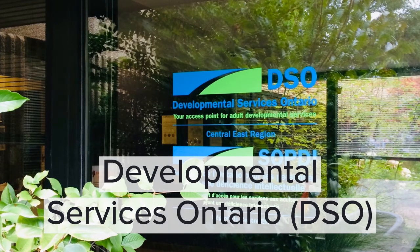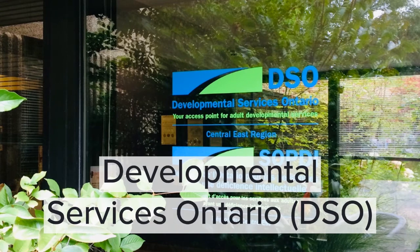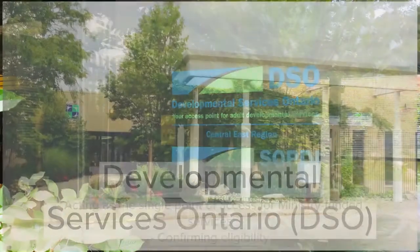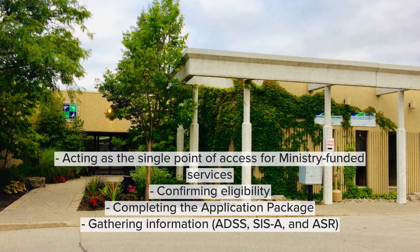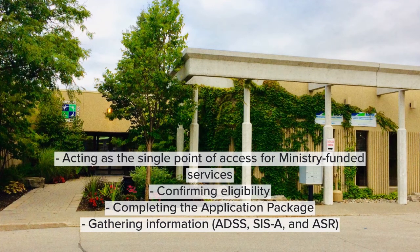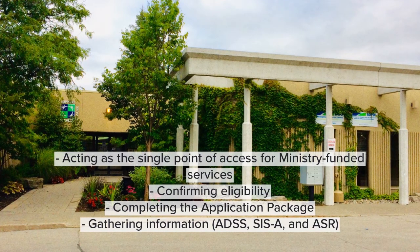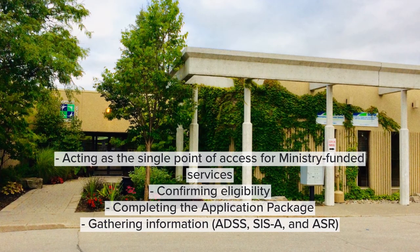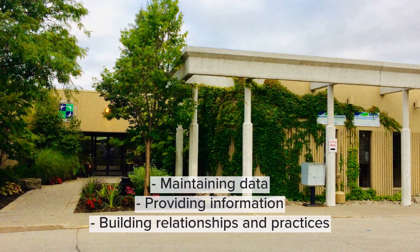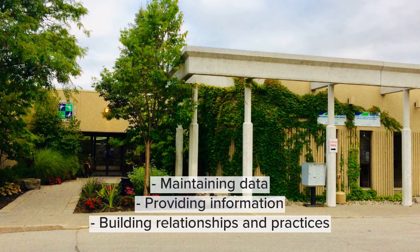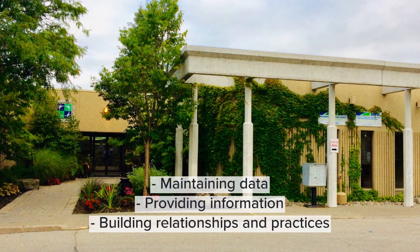In July 2011, nine agencies across the province were contracted to operate the DSO in nine regions. They were directed to implement a provincial application process as outlined in the policy directive set by the Ministry. DSO was tasked with acting as a single point of access to Ministry-funded services, confirming eligibility, completing the application package and conducting reassessment when people's needs change, gathering information about the individual through the ADSS and their support needs via the SIS-A, and summarizing the information in an Assessor Summary Report, or ASR. Additional tasks included maintaining data to inform policy and program delivery, providing information about other community services, and building relationships and practices in each region based on the principles of transformation.